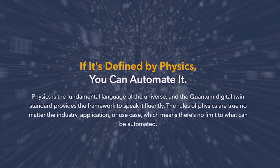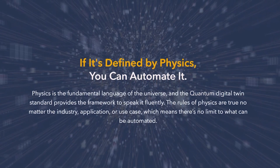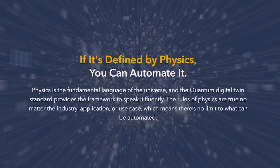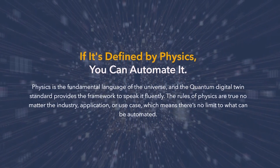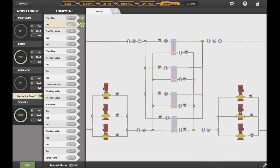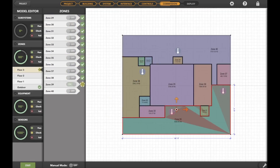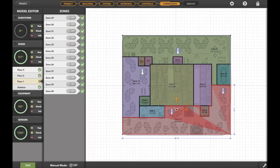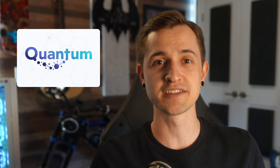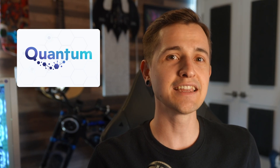Quantum is the foundation for digital twins, but it's not just about naming parts of a building — it's about understanding how they function based on physics. For example, it doesn't just label a light switch; it describes what a light does, the electricity it uses, the heat it generates, and when and how to turn it on and off. This standardized approach extends to all devices within the building, and by grounding everything in the principles of physics, Quantum provides a consistent starting point and a high-level API for everyone building in the PropTech industry.